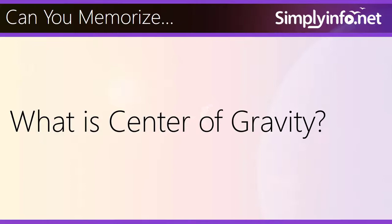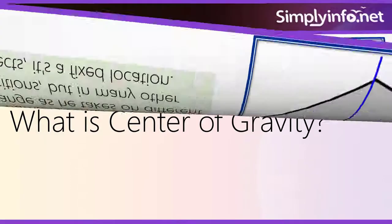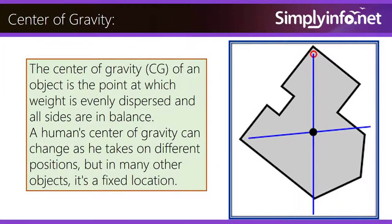So now do you know what is center of gravity? The center of gravity of an object is a point at which weight is evenly dispersed and all sides are in balance.